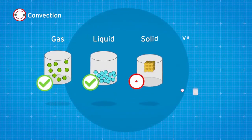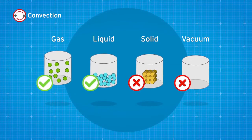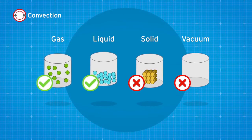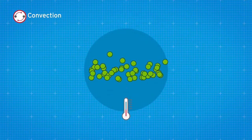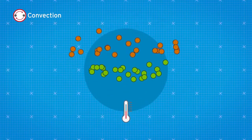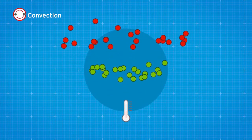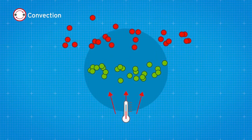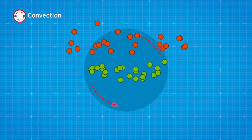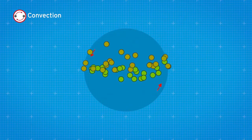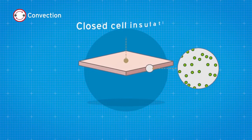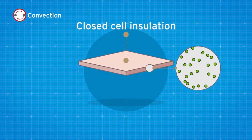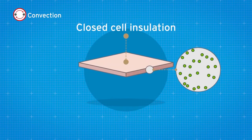Convection only takes place in gases or liquids — it cannot happen in solids or in a vacuum. When the molecules that make up a gas or liquid heat up, their density will change. Warmer air will become less dense and rise. Closed-cell insulation with small cell sizes inhibits convection within the cell, making them less prone to affecting neighbouring cells.